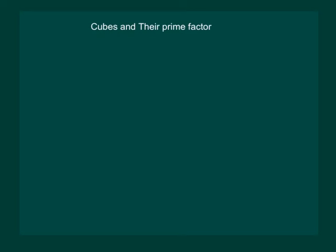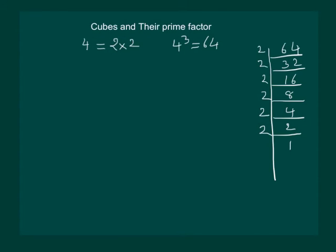Let us consider a number 4. Then, it is clear that its prime factors are 2 and 2. Now, we know that 4 cube is 64. Let us find the prime factors of 64.